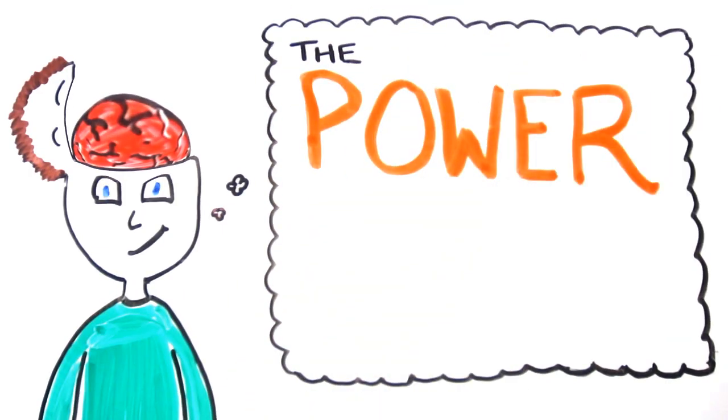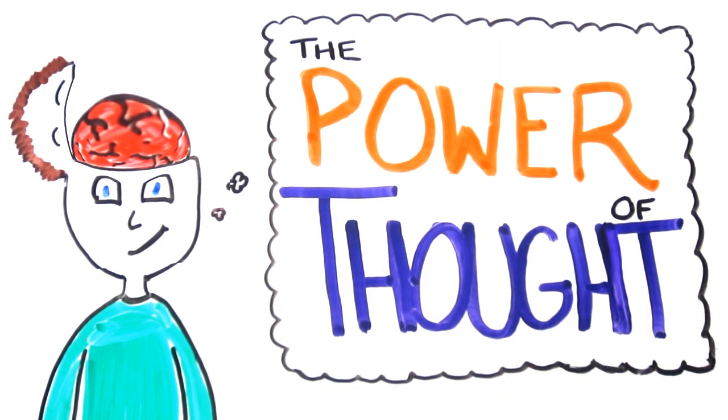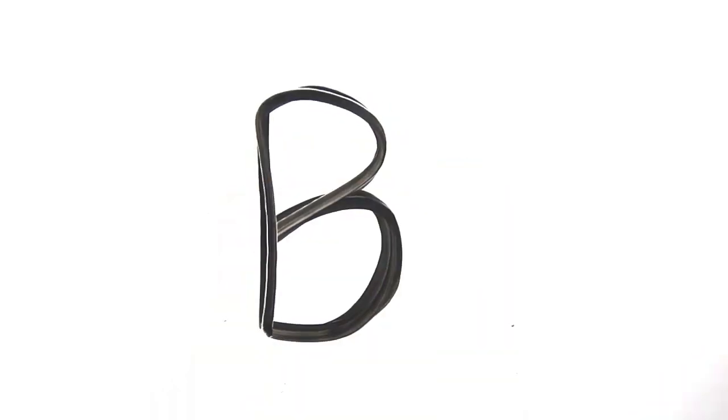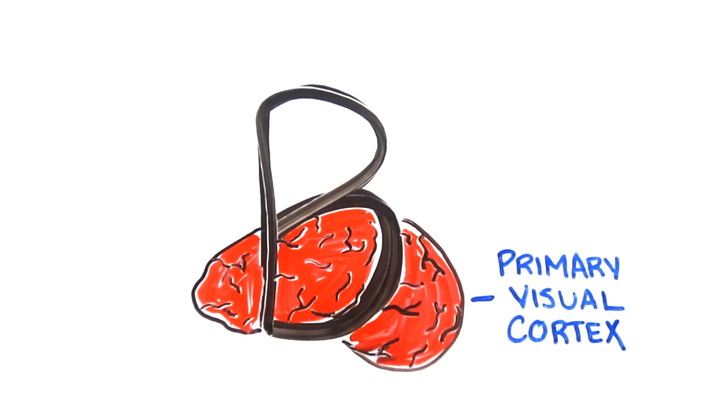From a neuroscientific standpoint, imagining an action and doing it require the same motor and sensory programs in the brain. For example, if you were to close your eyes and imagine the letter B, the primary visual cortex lights up in the same way it does when you look at the letter on the screen.